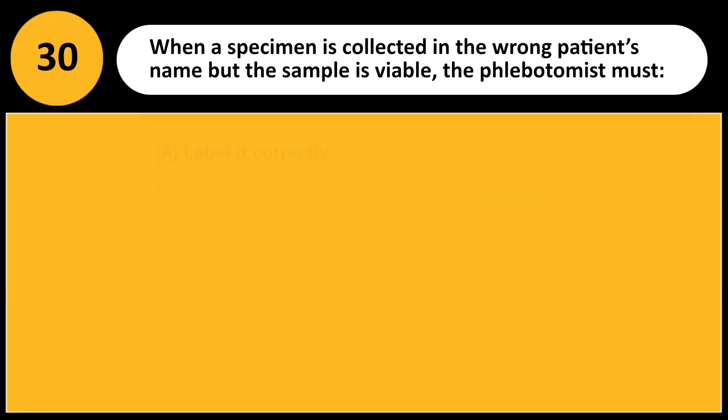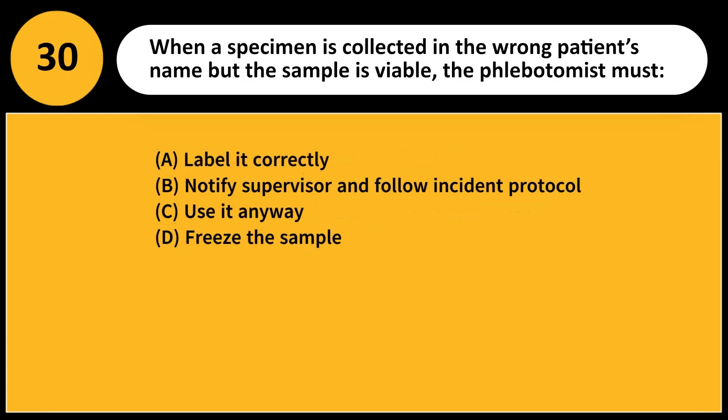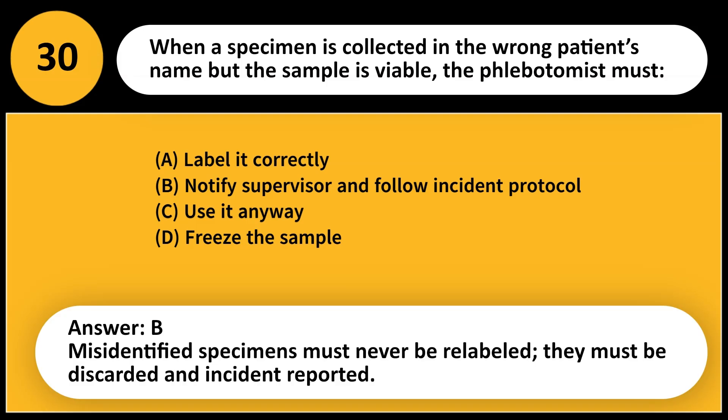When a specimen is collected in the wrong patient's name but the sample is viable, the phlebotomist must: A. Label it correctly. B. Notify supervisor and follow incident protocol. C. Use it anyway. D. Freeze the sample. Answer: B. Misidentified specimens must never be relabeled; they must be discarded and an incident reported.